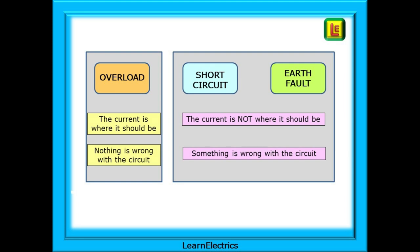But if we look at short circuits and earth faults we will find that these two types are very similar. The current is not flowing where it should be. It is in the wrong part of the installation and is not following the normal path. Something is wrong with the circuit.